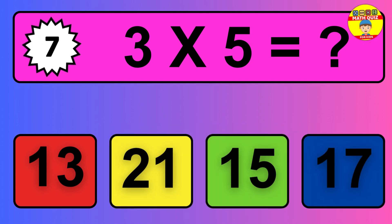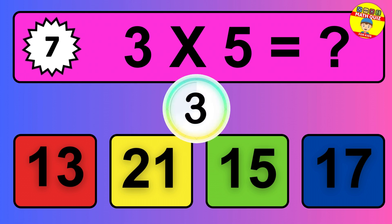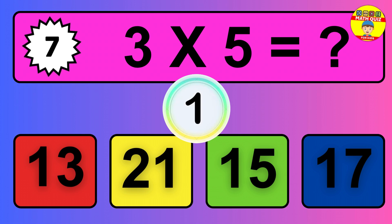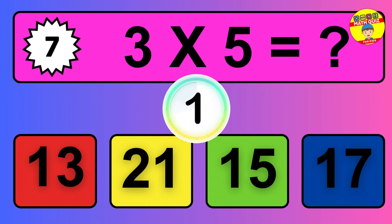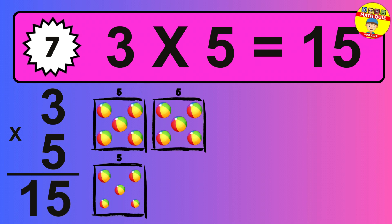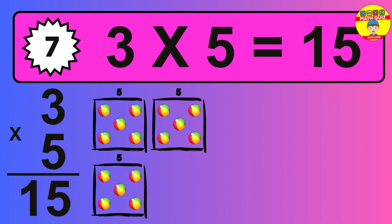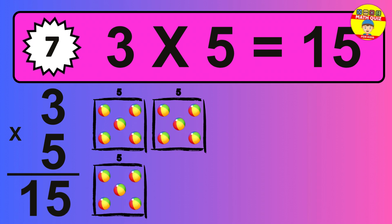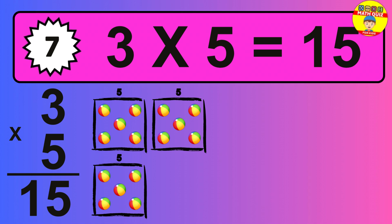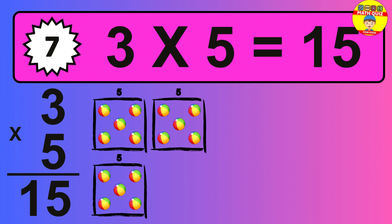Question 7. 3 times 5 equals what? So the answer is 3 times 5 is 15. To calculate, we have 3 groups with 5 balls each one. So how many balls do we have? 15 balls.